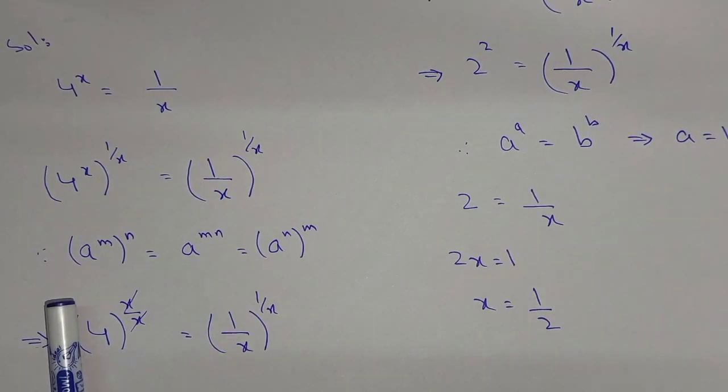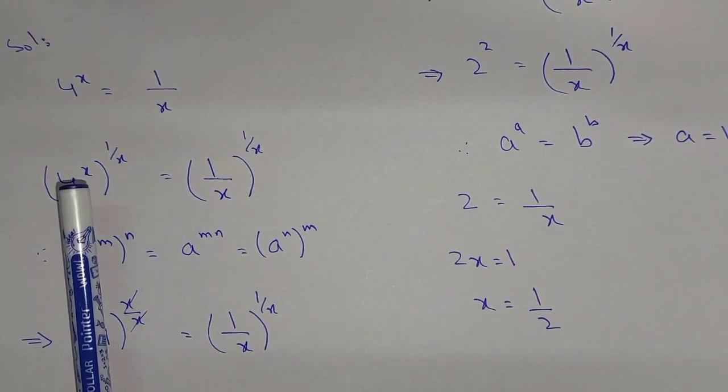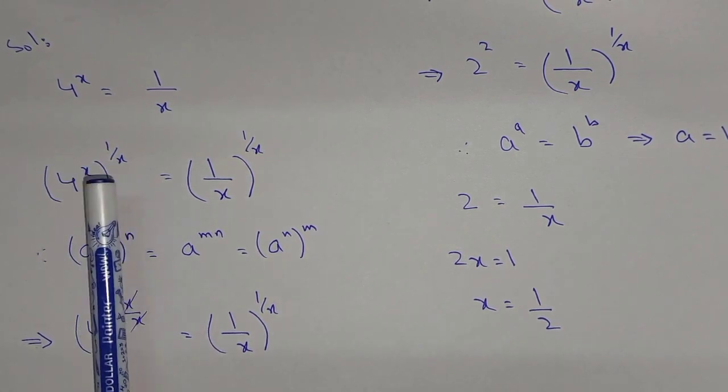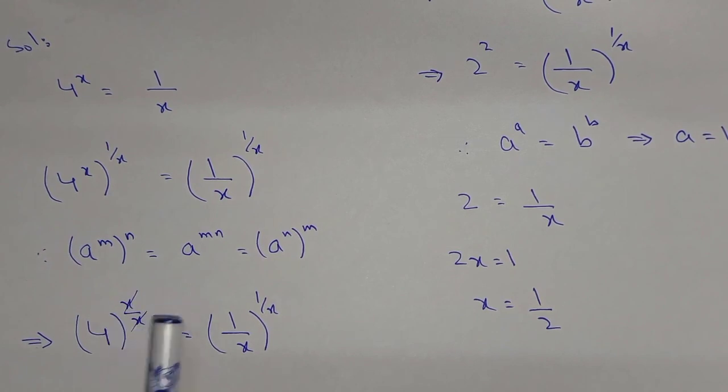The same property we are applying. So x multiplied by 1/x in the power, x over x, that will be cancelled. So 4 = (1/x)^(1/x).